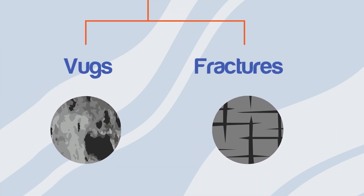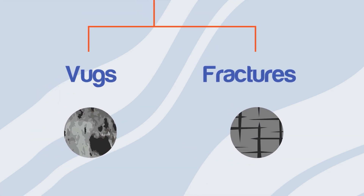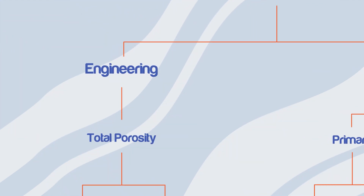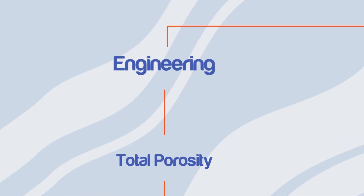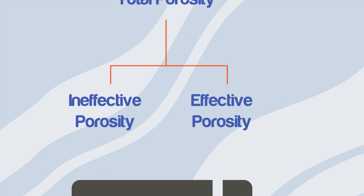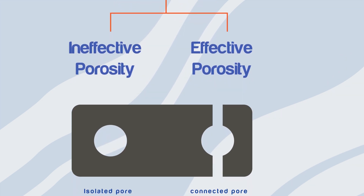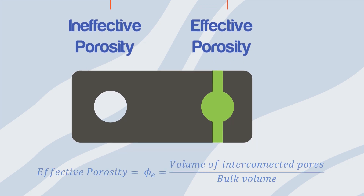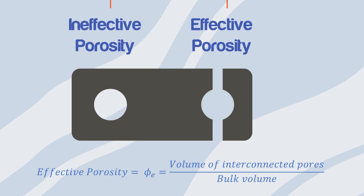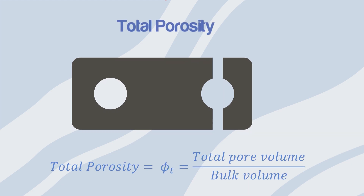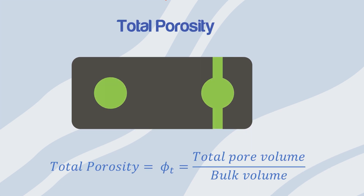In terms of engineering classification, porosity can be subdivided into two categories: effective and total. Effective porosity is the interconnected pore volume divided by the bulk volume, while total porosity is the total pore volume divided by the bulk volume.